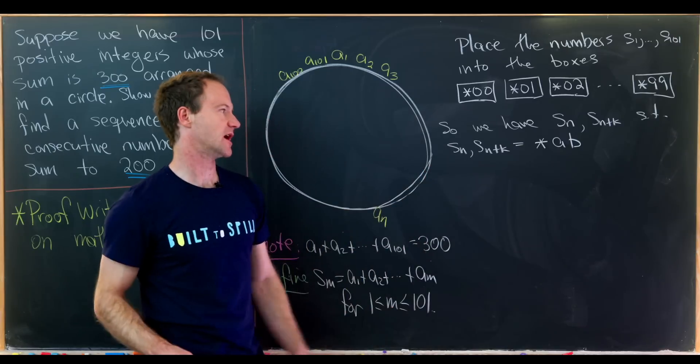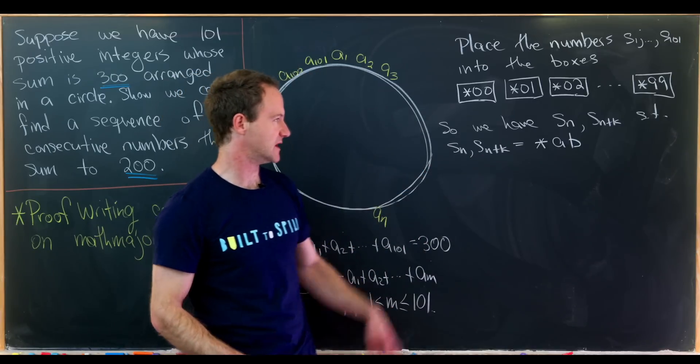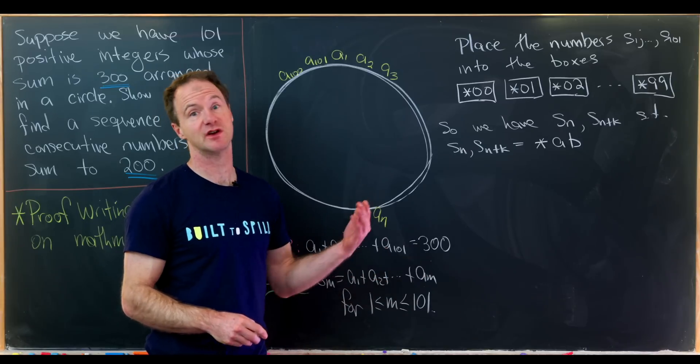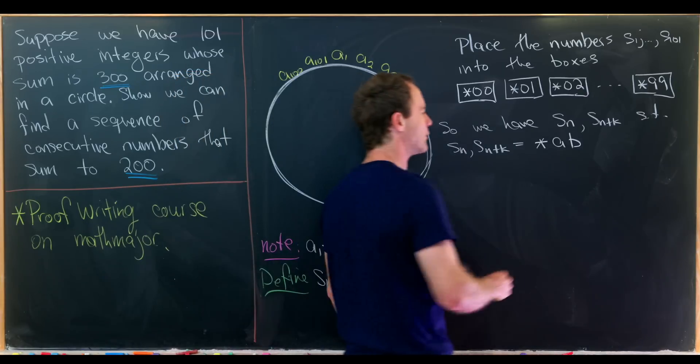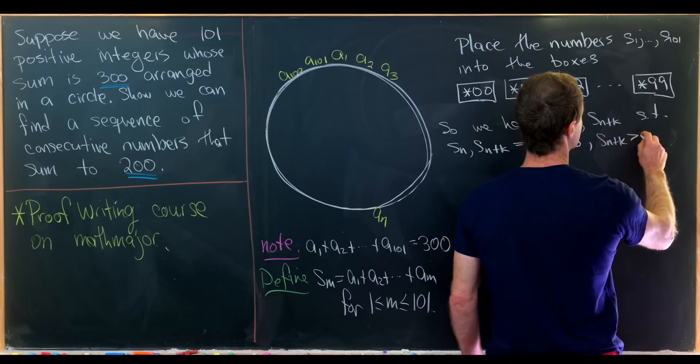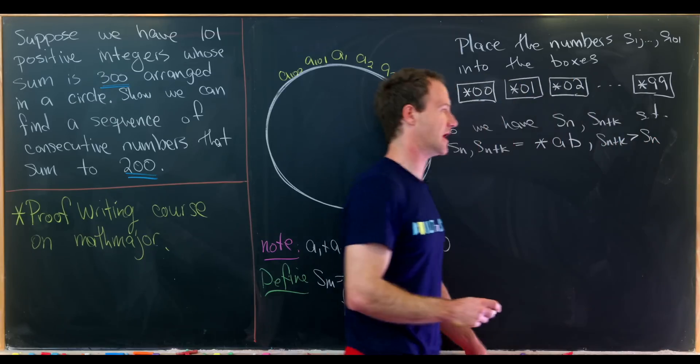b. So I'll just write they're equal to star ab. The star is going to be different though for each one of them. We'll have different starting terms. And we know that for sure because s sub n plus k is strictly bigger than s sub n.